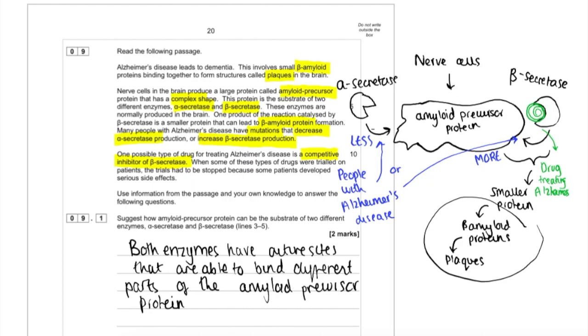In Alzheimer's, which I've drawn here in blue, people have less alpha secretase or more beta secretase. In green here is this drug. So let's try and answer the questions.